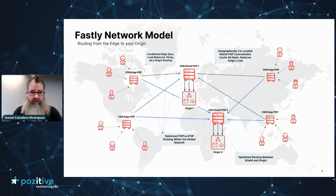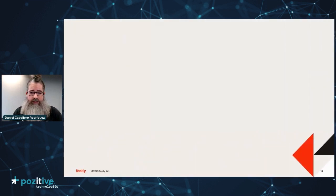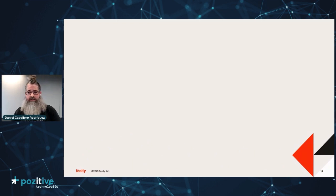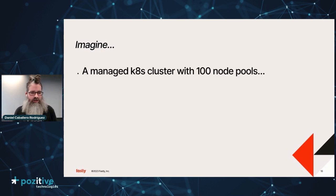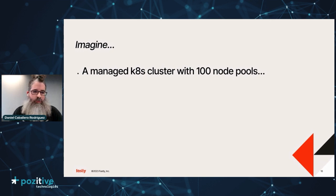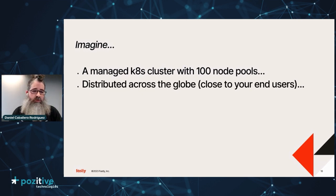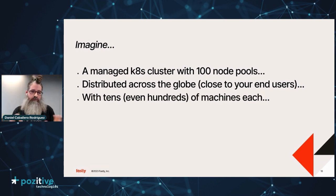Today I'll focus on the compute portion. To introduce Fastly Compute — since you're in the DevOps track, I guess you know about Kubernetes. To get an idea of what Compute is: imagine with this network I described, you had a massive Kubernetes cluster where, rather than POPs, imagine the POPs were node pools distributed across the globe with great connectivity to your end users. Each POP, each node pool, being tens or hundreds of machines.